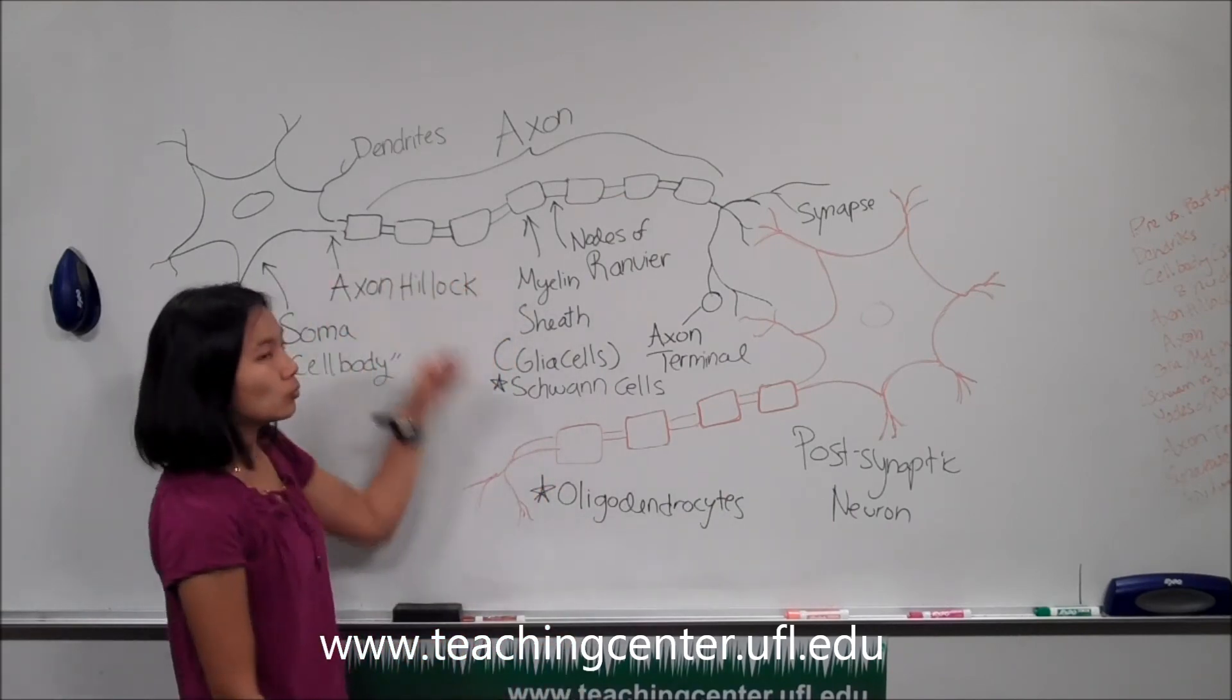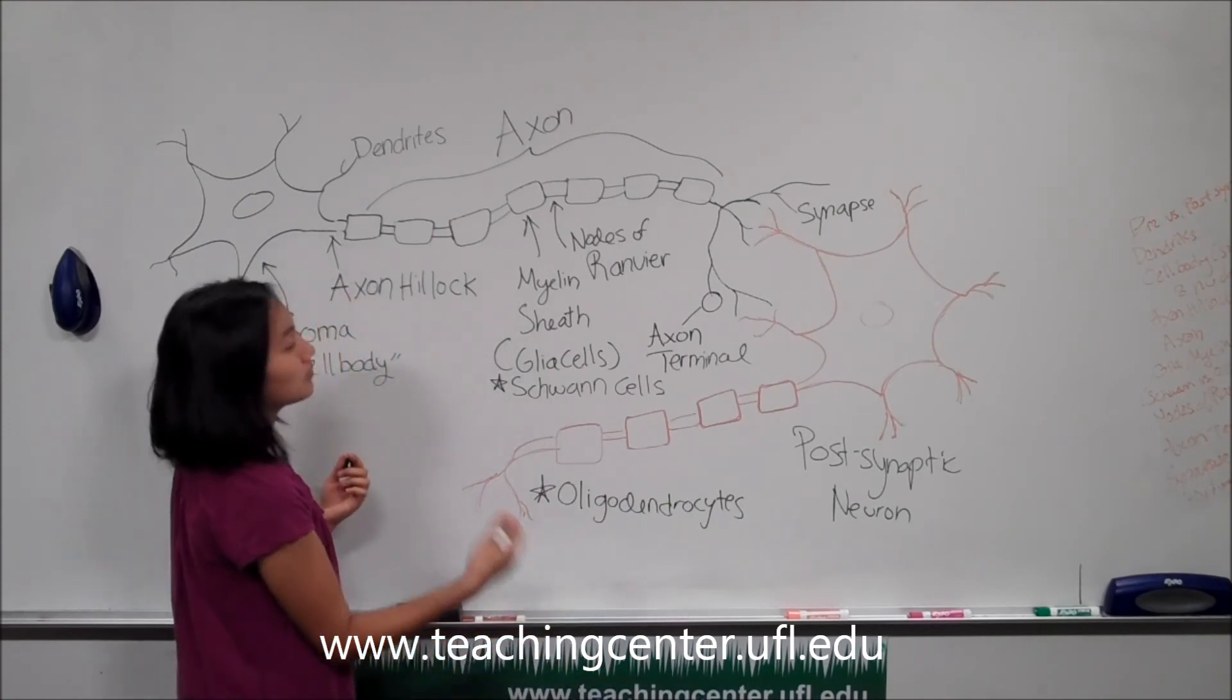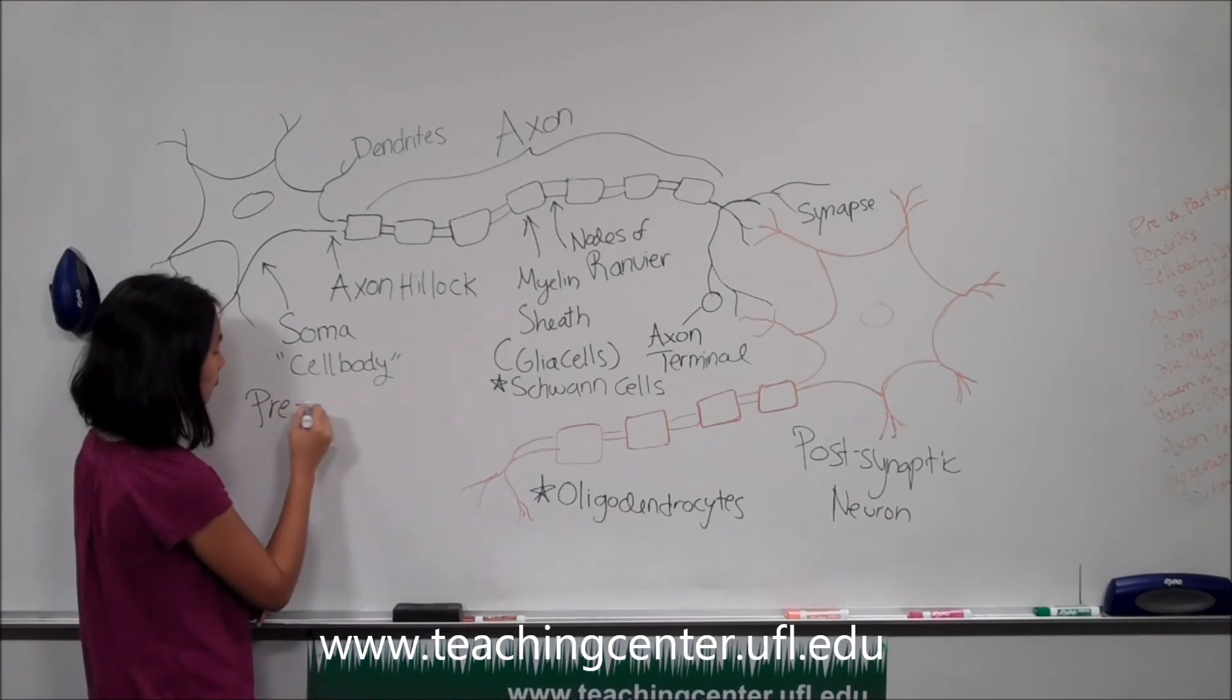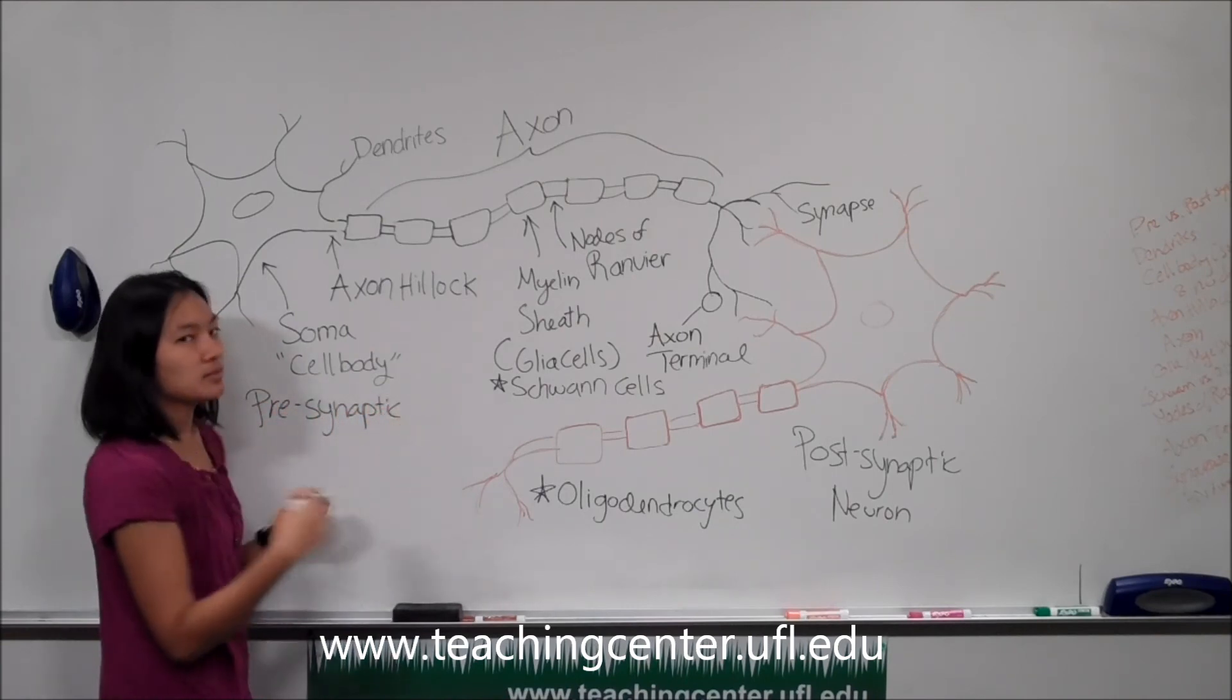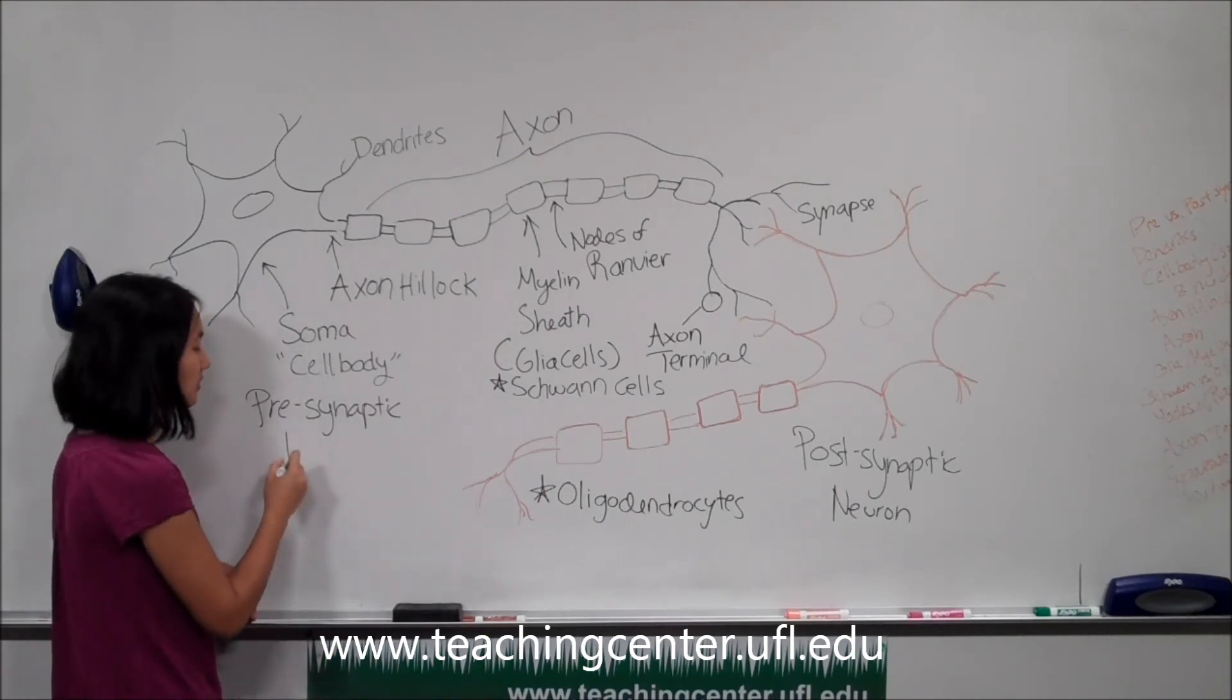And then this black neuron up here which sent out that signal will be known as the presynaptic neuron. These are just some basic spatial terminology that a lot of people use when it comes to the nervous system.